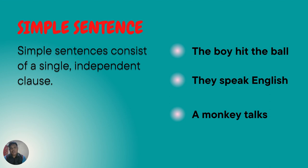A simple sentence at least consists of a single independent clause. An independent clause contains a subject and verb and expresses a complete thought. For example: 'The boy hit the ball,' 'They speak English,' and 'A monkey talks.' From these examples, 'The boy hit the ball' can be identified as a simple sentence where the subject is 'the boy.'